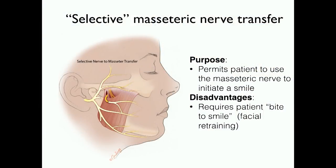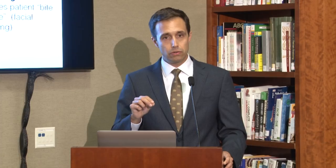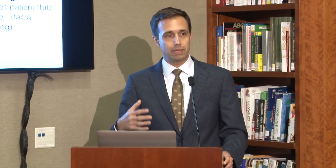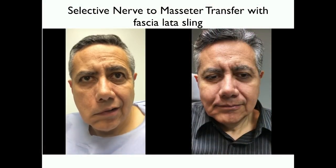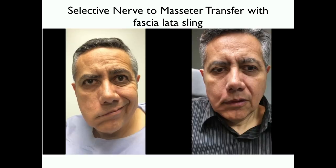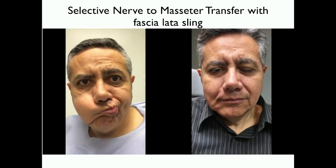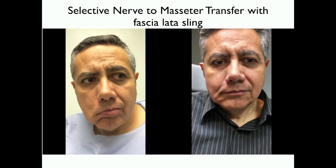In my opinion, this provides the most effective and most natural-looking smile. The clear disadvantage is you have to think about it — you have to think 'I'm going to bite now in order to smile.' It requires retraining and practice, but because it provides new nerve input to the facial nerve and thereby the actual muscles of the face, the smile can be the most impressive of the reanimation surgeries. This patient has right-sided facial paralysis and has undergone a nerve-to-masseter surgery — biting to initiate a smile — showing significant improvement, though not perfect symmetry.